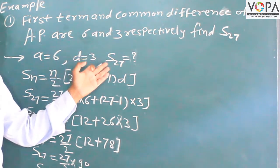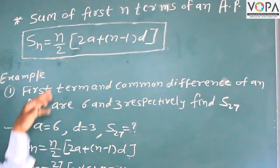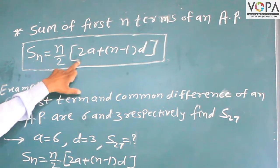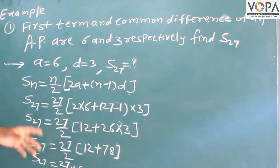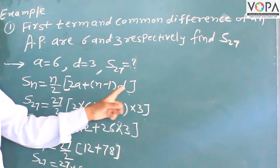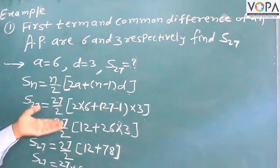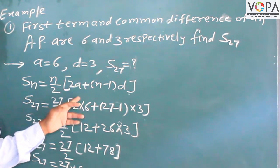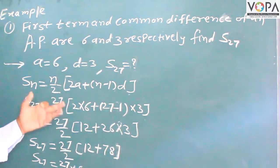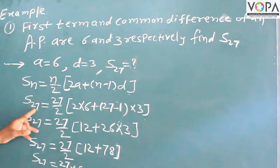Therefore, we need to calculate S27 — find S27. The sum of the first n terms is generalized as Sn equal to n upon 2 times 2a plus n minus 1 into d, where a means first term and d means common difference. Putting in the given values: a is equal to 6, d is equal to 3, and n is equal to 27 because we want S27.